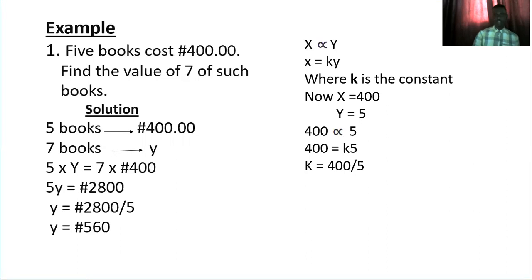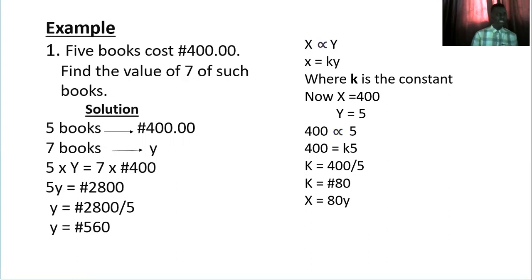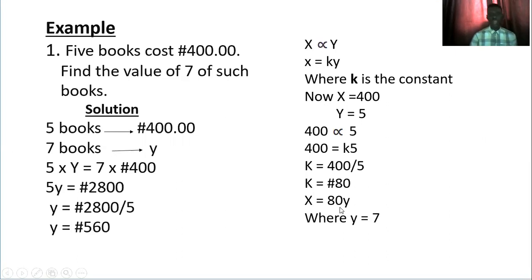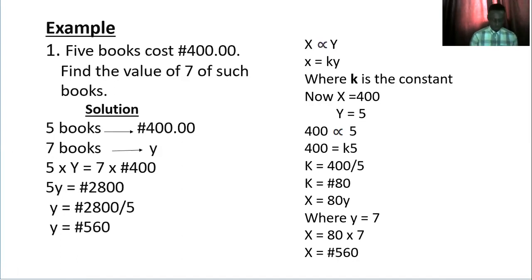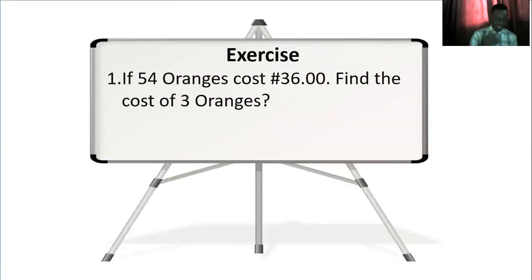We divide both sides by five, so k equals eighty naira. Now we have the formula x equals 80y. When y equals seven, x equals eighty times seven, which equals five hundred and sixty naira. So both methods give the same answer. You can either use the cross-multiplication method or the formula method to simplify direct proportion.